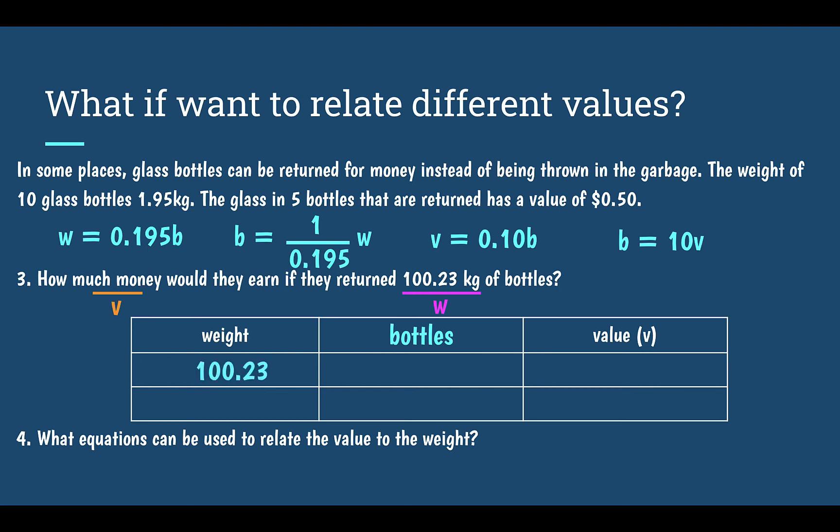I'm going to go from the weight to the bottles, and then from the bottles to the value. I know that 100.23 kilograms is our weight. First, I'm going to relate our weight and figure out how many bottles that equals.